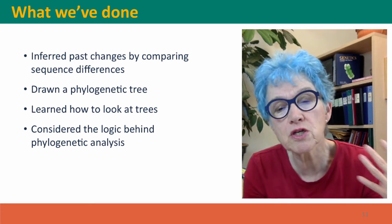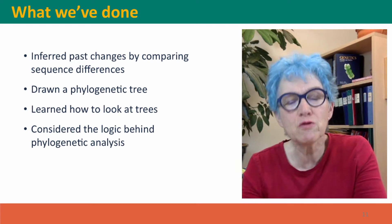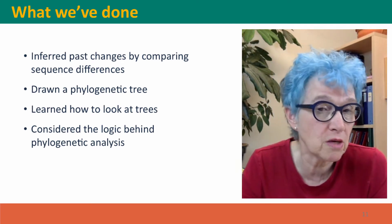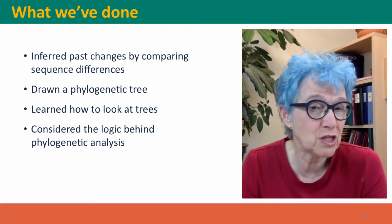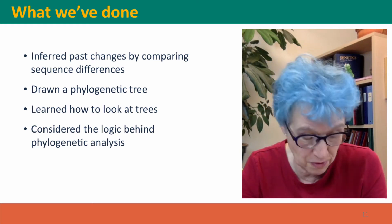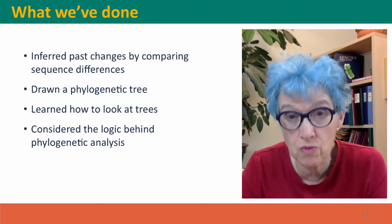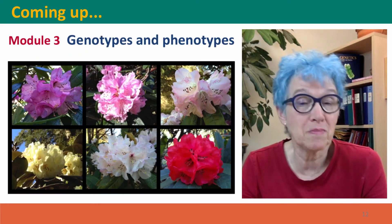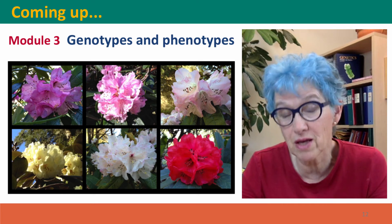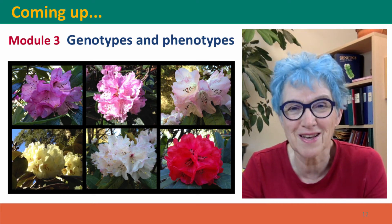We've considered the logic behind phylogenetic analysis — how using sequence differences to infer relationships lets us then study evolutionary processes by thinking about phenotypes. This is the end of Module 2. Coming up next is Module 3, where we're going to start seriously thinking about genotypes and phenotypes. I hope to see you there.